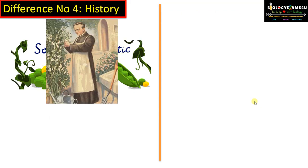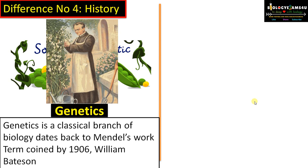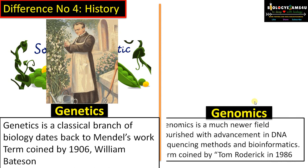Difference number four is regarding history. Genetics is a classical science — a branch of biology that deals with the study of heredity and variation — dating back to Mendel's work. The term was coined in 1906 by William Bateson. It is a classical science.